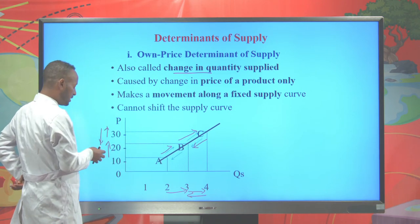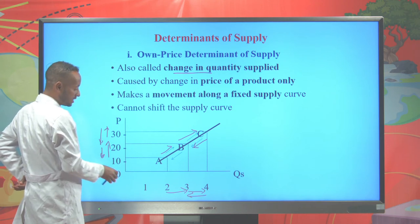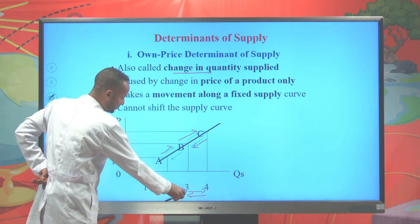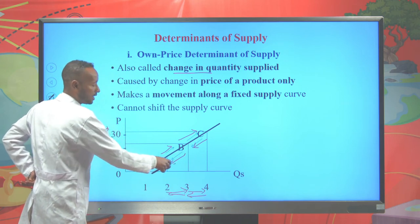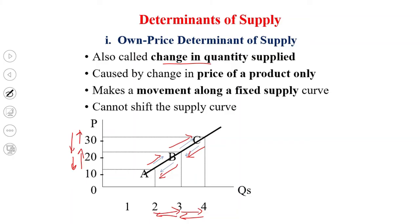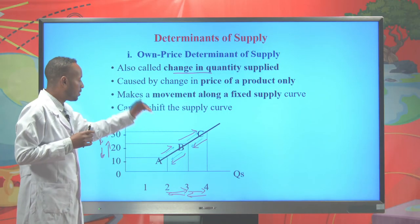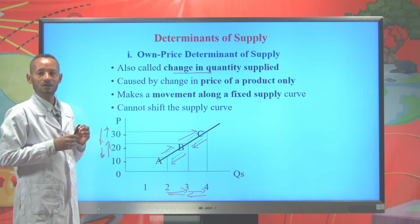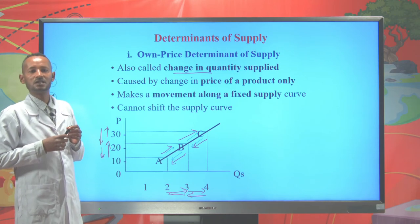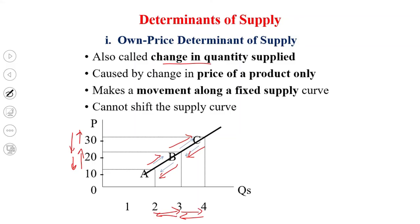When price decreases from 30 to 20, quantity supplied for orange decreases from 4 to 3 — a movement from point C to B. And when price decreases from 20 to 10, quantity supplied declines from 3 kilograms to 2 kilograms — a movement from point B to A. So with the change in price of a commodity, there is a movement along a fixed supply curve, and there is no shift in the supply curve.